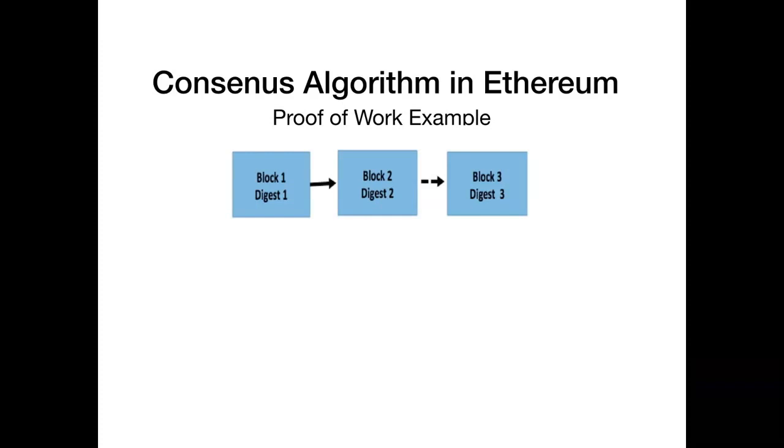So every node in the network will take up the challenge of creating the third block and committing the same to the blockchain network. For this to achieve, each of the nodes will try to solve a mathematical equation. In the context of Ethereum, it is a digest value that needs to be created and it has to be less than some difficulty level preset by the system.